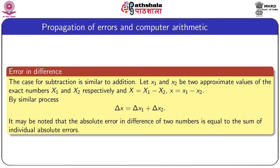Similarly, the error in the difference of two numbers is given by: let capital X equal x1 minus x2 (the exact value) and small x represent the approximate value of the resultant number. By a similar process, it is shown that the absolute error in the difference equals the sum of the absolute errors in the individual numbers — the same as the generation of errors in summation.